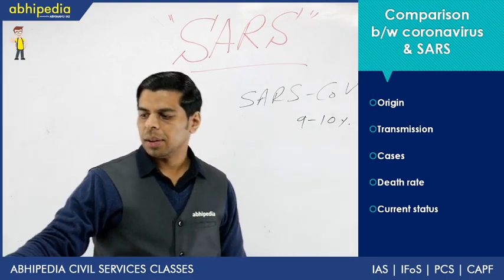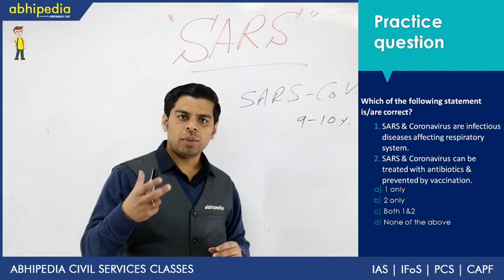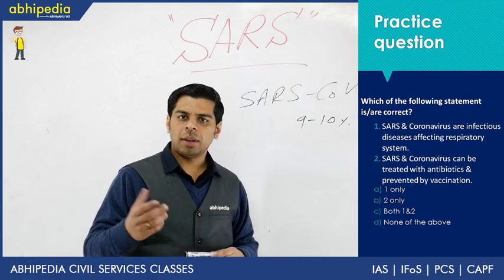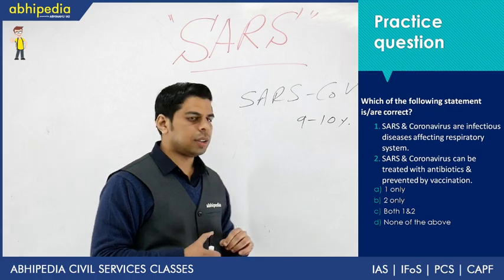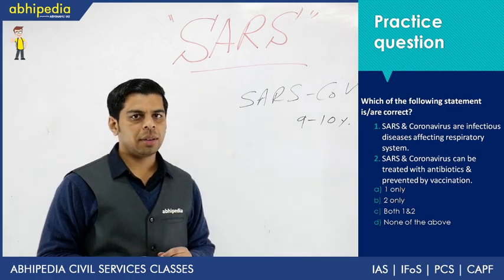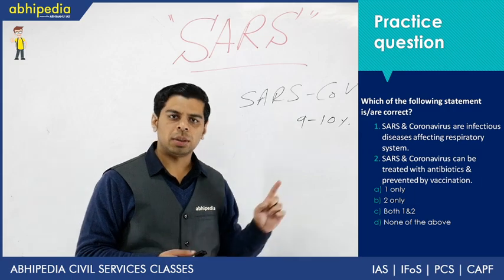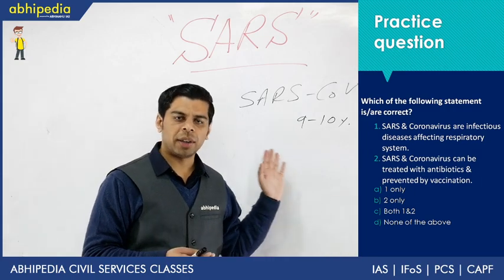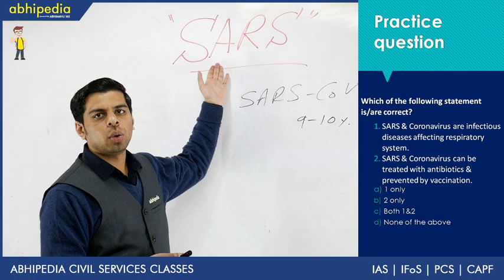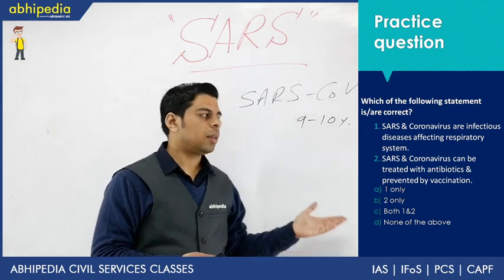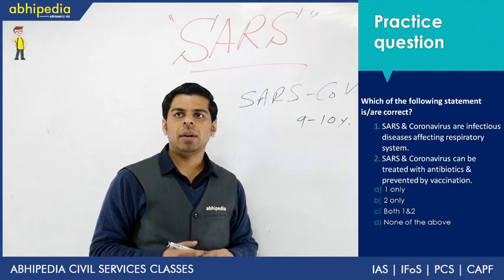Let's do a practice question. Statement one: both SARS and coronavirus are infectious diseases in which the respiratory system is affected. This statement is correct — both involve droplet infection as the mode of transmission and both affect the respiratory system. SARS itself stands for Severe Acute Respiratory Syndrome, making this point self-evident.